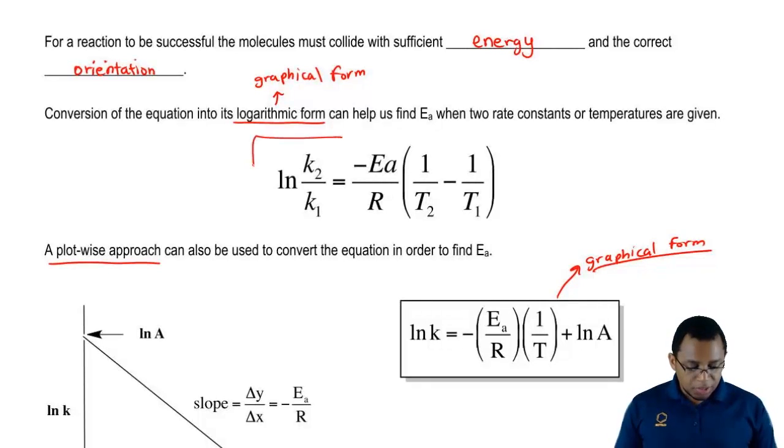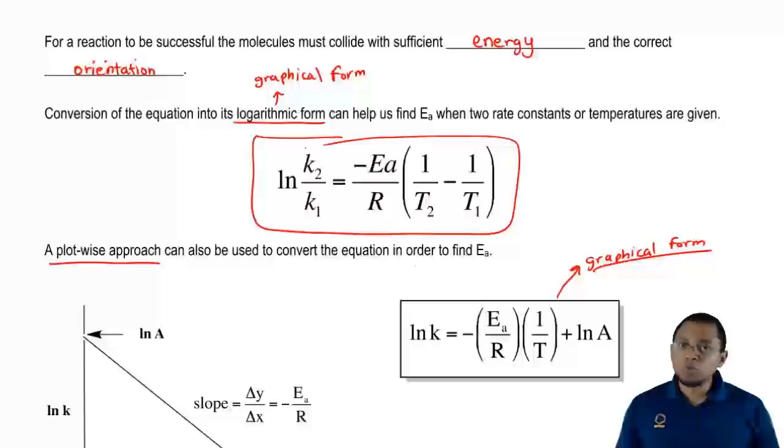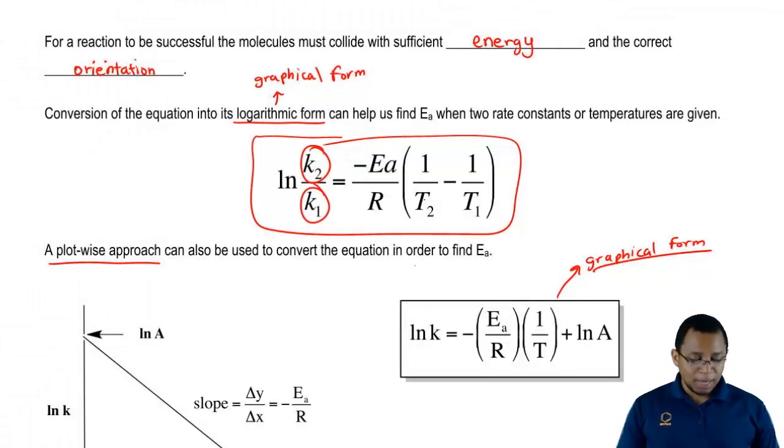When do we use this particular form? This is called the two-point form of the Arrhenius equation. We use this form anytime we have two k values or we have two temperatures. That's the time we use this.